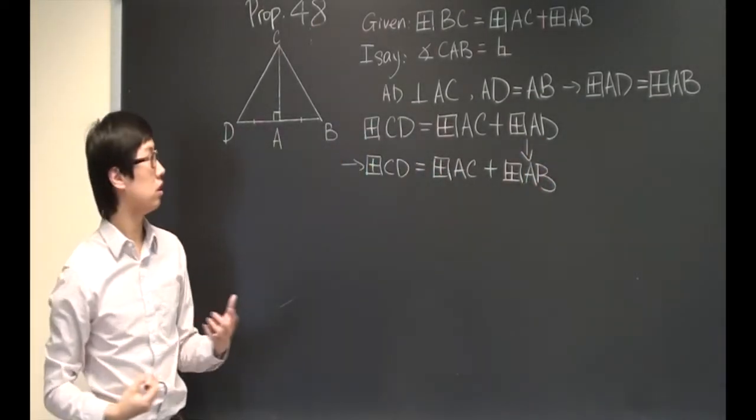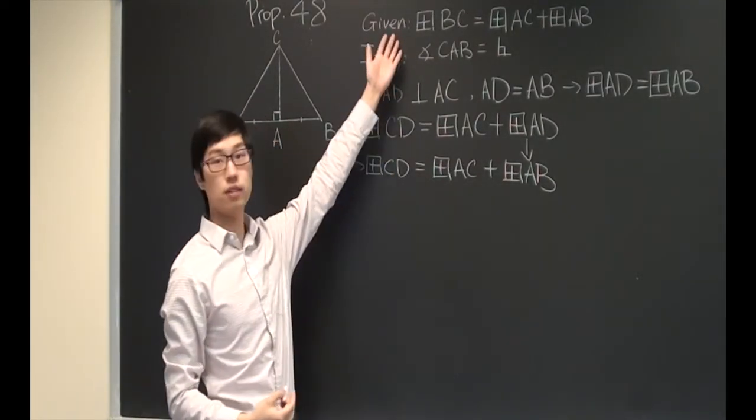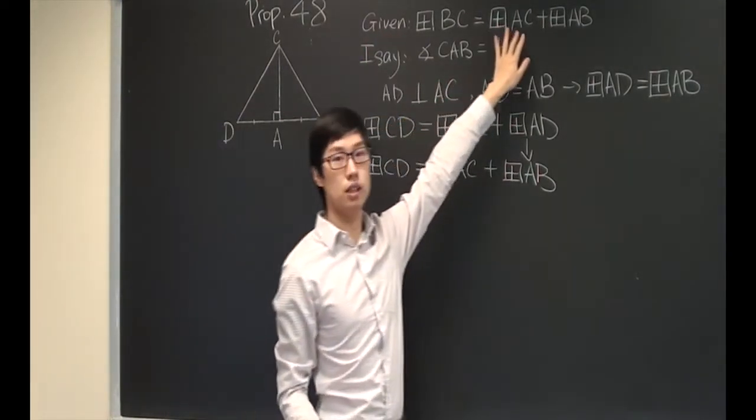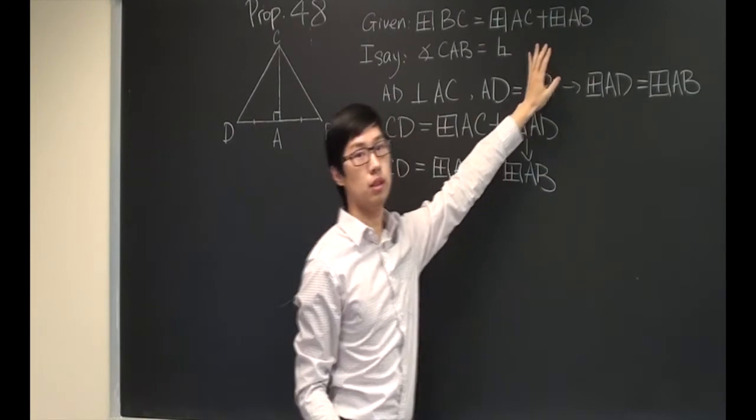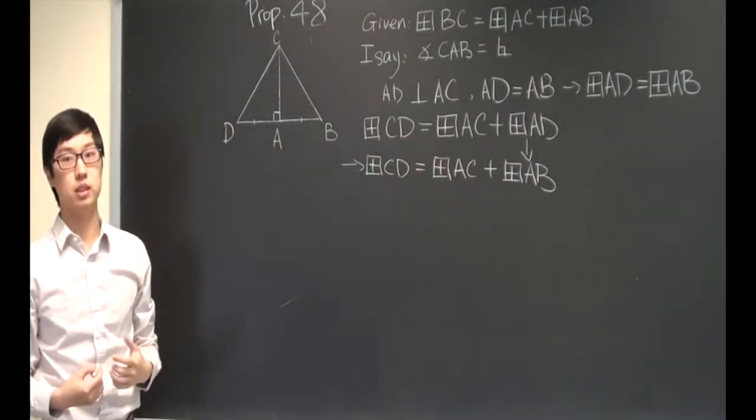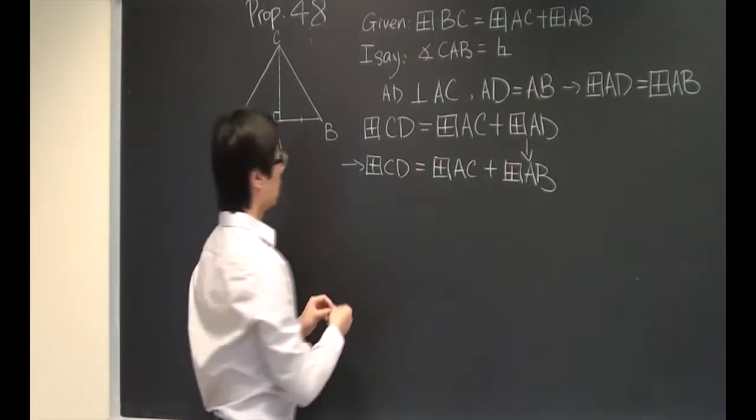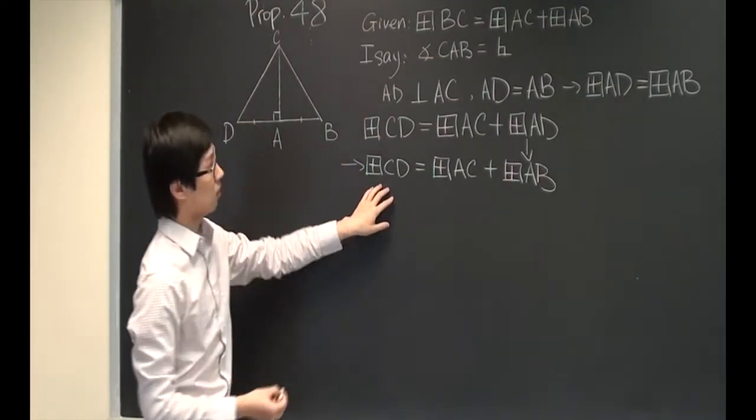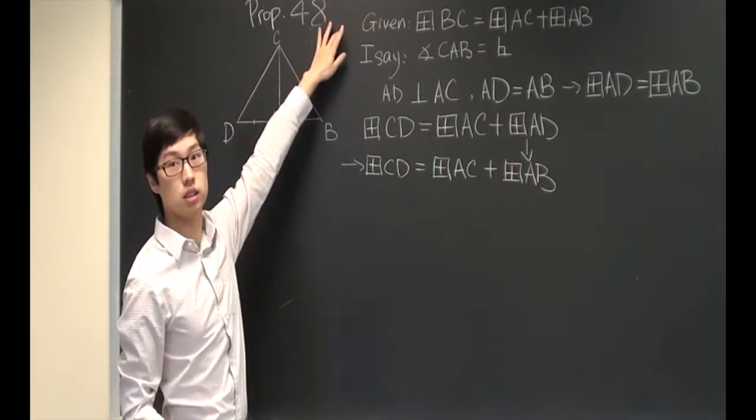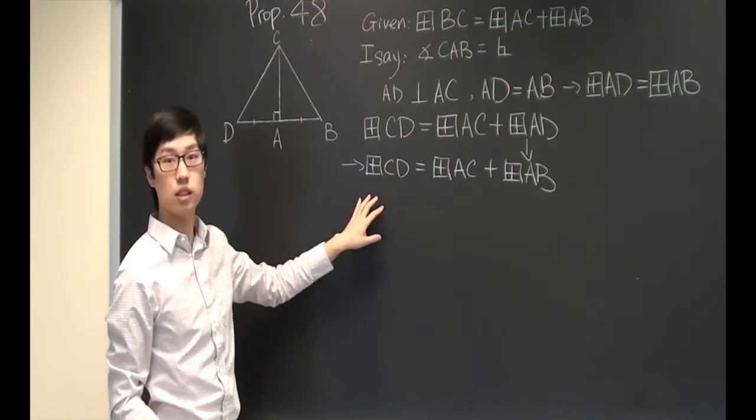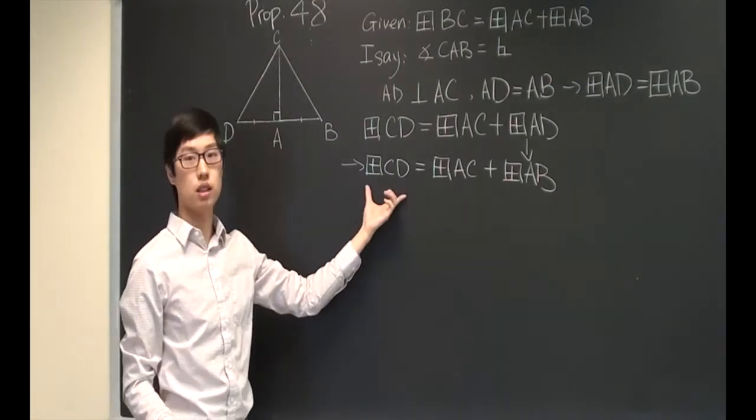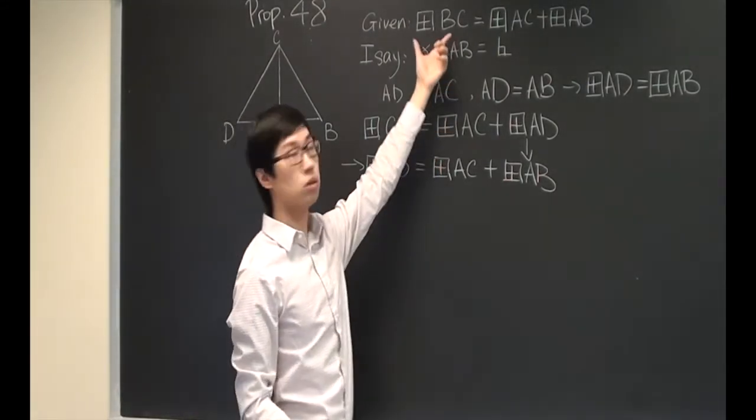We also know from the given that square on AC and square on AB is equal to square on BC. Looking at these two equations, we can conclude that square on CD is equal to square on BC.